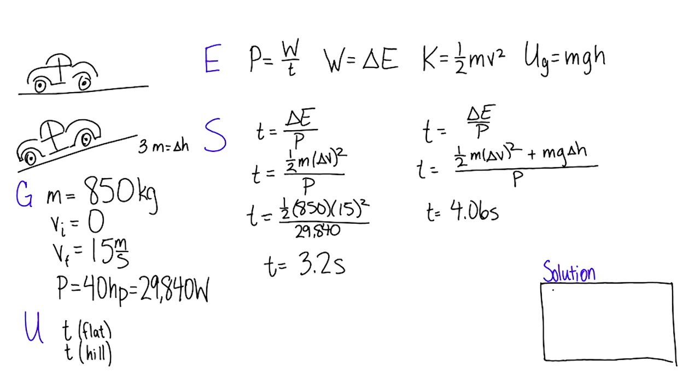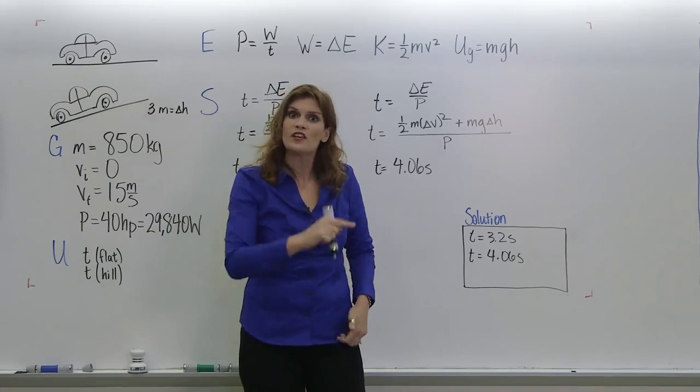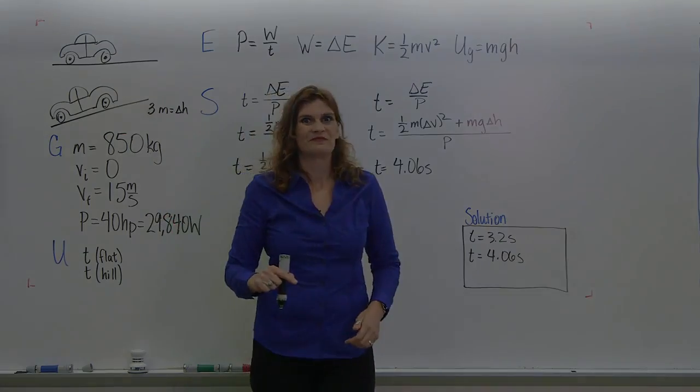If it takes 3.2 seconds to travel straight on a line and you have a maximum power output, then it makes sense that it takes a little bit longer to go up that hill. Well, I hope this helps you with the rest of your problems.